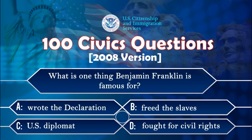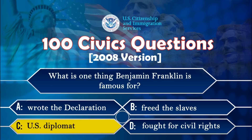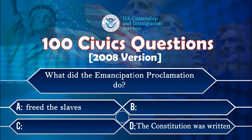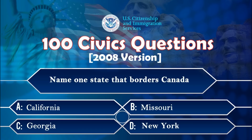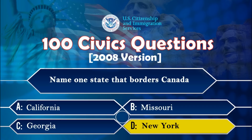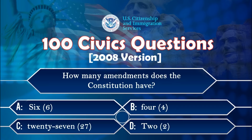What is one thing Benjamin Franklin is famous for? US diplomat. What did the Emancipation Proclamation do? Freed the slaves. Name one state that borders Canada. New York. How many amendments does the Constitution have? 27.